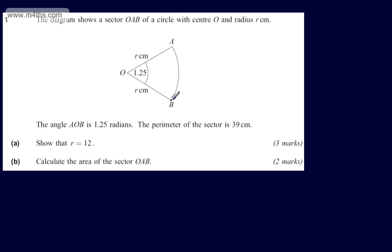If we look at the perimeter, we're going to have R plus R plus the arc length AB. In general, the arc length L is R multiplied by theta, where R is the radius and theta is the angle measured in radians.